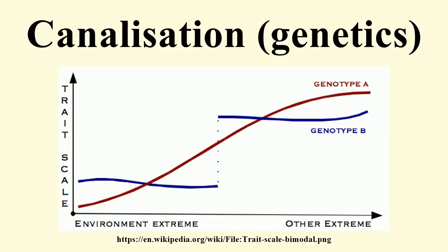It is, however, possible to explain this observation of genetic assimilation using only quantitative genetics and a threshold model, with no reference to the concept of canalization. However, theoretical models that incorporate a complex genotype-phenotype map have found evidence for the evolution of phenotypic robustness contributing to genetic assimilation, even when selection is only for developmental stability and not for a particular phenotype, and so the quantitative genetics models do not apply. These studies suggest that the canalization heuristic may still be useful, beyond the more simple concept of robustness.